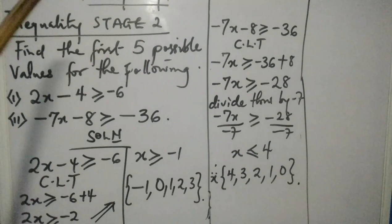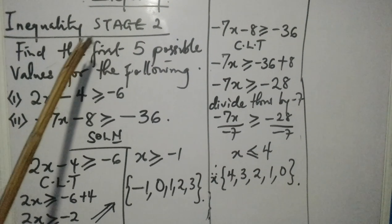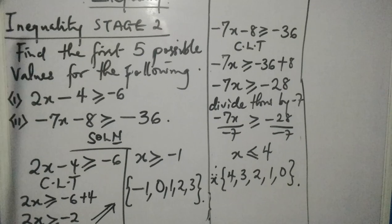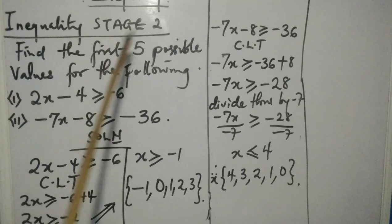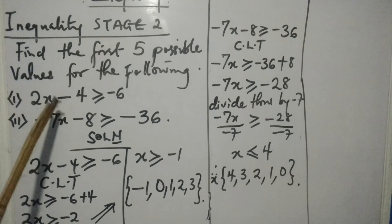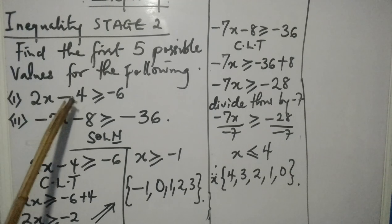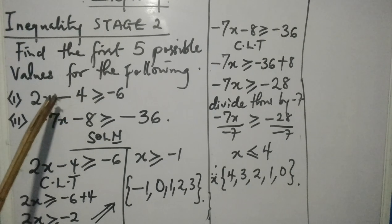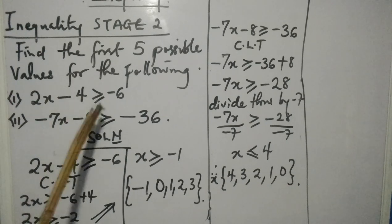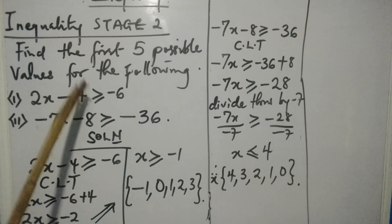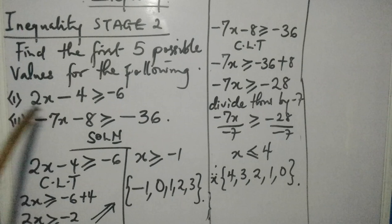If you look at this Stage 2 very well, find the first 5 possible values for the following questions. In Stage 1, we only treated less than or greater than - we didn't look at or equal to.